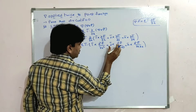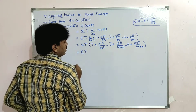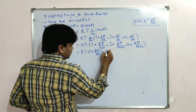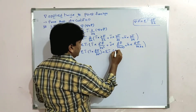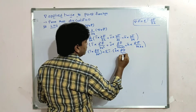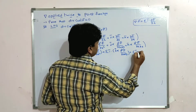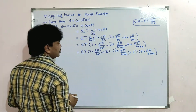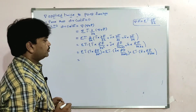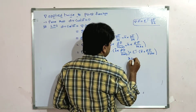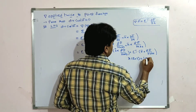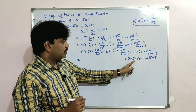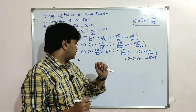Now apply the summation and i̅ dot on each and every term. We get sigma i̅ dot (i̅ cross ∂²F̄/∂x²) + sigma i̅ dot (j̅ cross ∂²F̄/∂x∂y) + sigma i̅ dot (k̅ cross ∂²F̄/∂x∂z). We use the formula: a̅ dot (b̅ cross c̅) = (a̅ cross b̅) dot c̅.